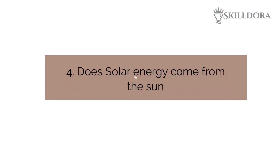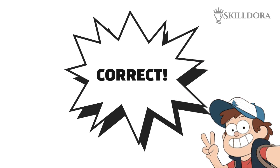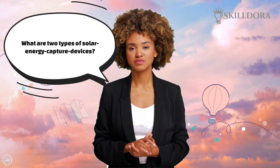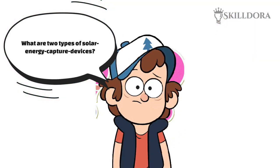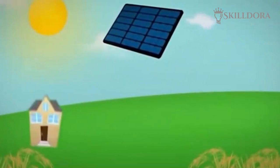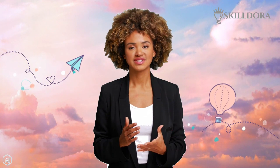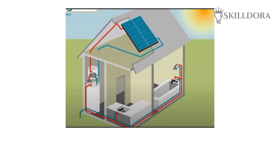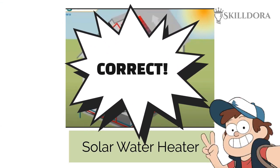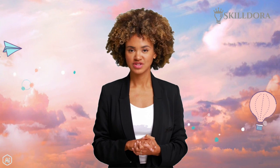If you chose option four — solar energy comes from the sun — then you are correct! Question two: in this lesson I also mentioned two types of solar energy capture devices. One of them was a solar panel, and the other is used to heat buildings and homes. If you said a solar water heater, then you got it right! Nice work. Now let's move on to lesson two: how solar energy works.